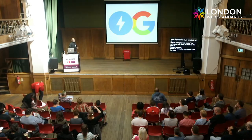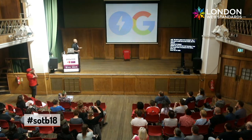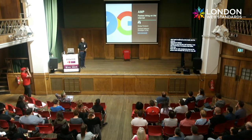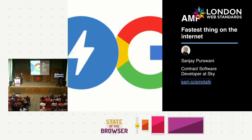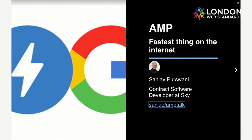The talk is called 'AMP: Fastest Thing on the Internet' — a bit of a sensationalistic, click-baity title. The purpose was to attract the right people: if you care about performance and don't know about AMP, this talk is for you.